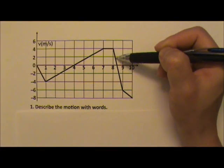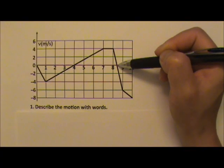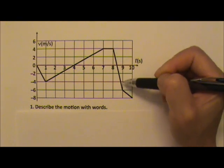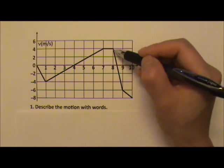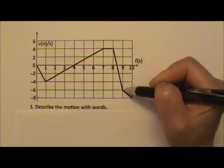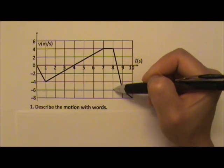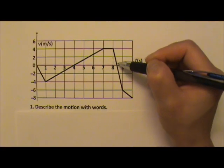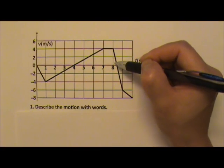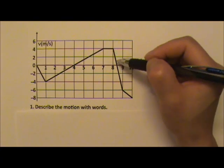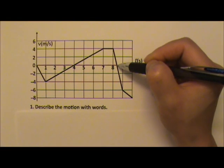The velocity is still positive, but it gets slower and slower to rest — zero velocity again. You can find the specific time because it goes from this to this value in 1 second. With two similar triangles in a 2-to-5 ratio, this time is 2 fifths of a second, making it 8.4 seconds. So it comes momentarily to a stop at 8.4 seconds.